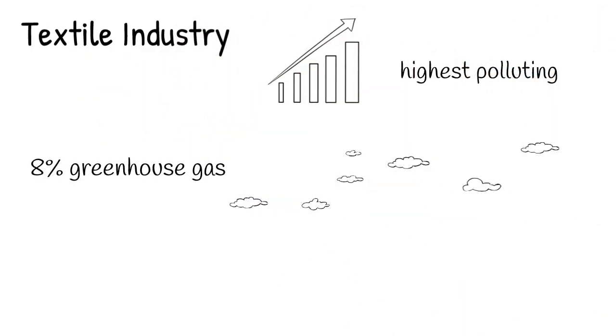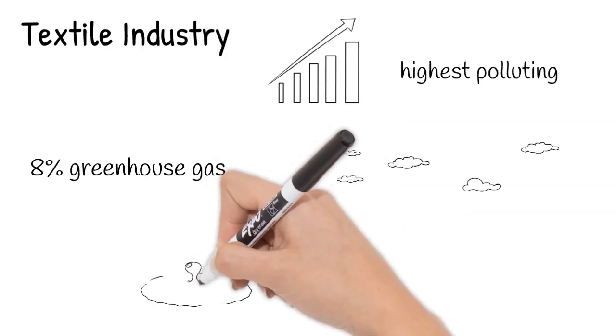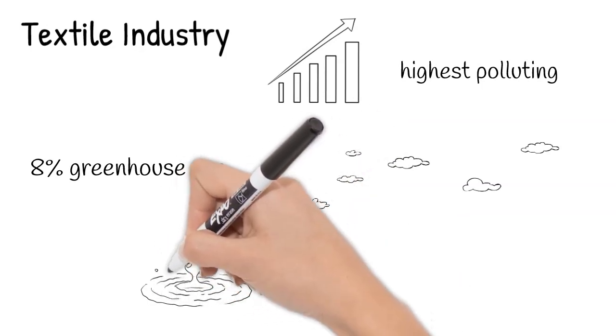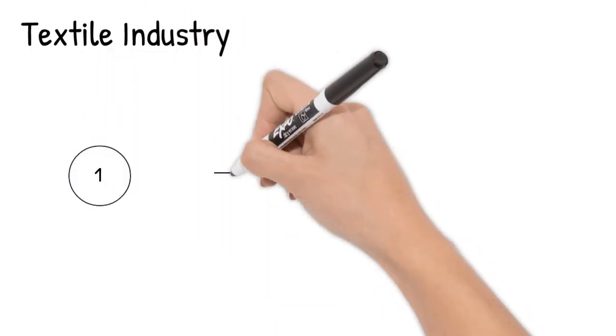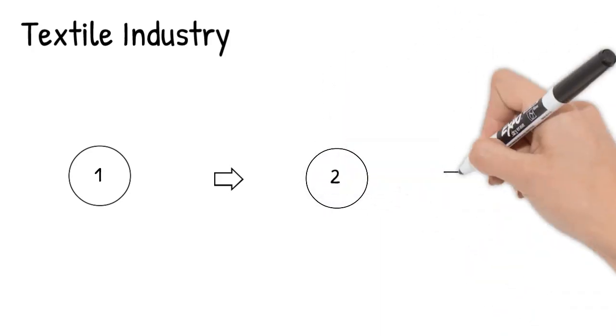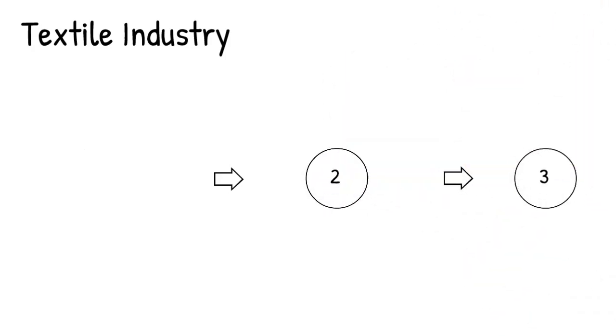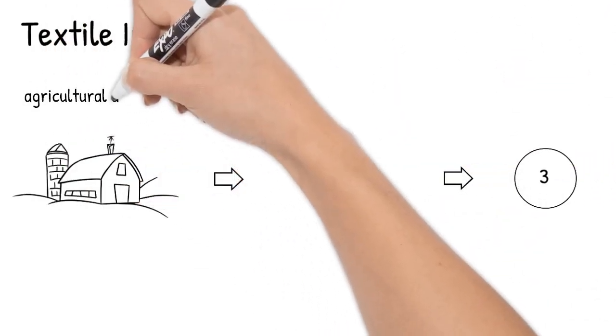It accounts for 8% of the world's greenhouse gas emissions and 17 to 20% of global industrial water pollution. The textile industry's supply chain can be broken down into three stages: first, the agricultural activities where plants are grown to produce natural fibers;